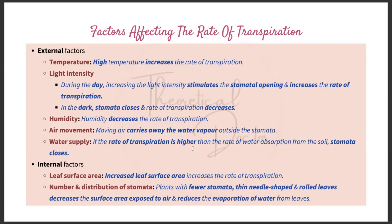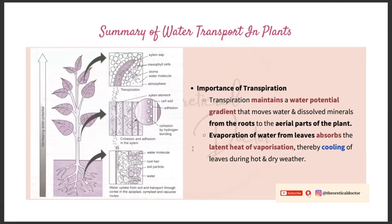Regarding water supply: if the rate of transpiration is higher than the rate of water absorption from the soil, the stomata close, reducing water loss by transpiration. For internal factors: increased leaf surface area increases the rate of transpiration. Plants with fewer stomata, thin needle-shaped, or rolled leaves decrease the surface area exposed to air, reducing evaporation of water from the leaves — because when less surface area is exposed to air, there is less evaporation.